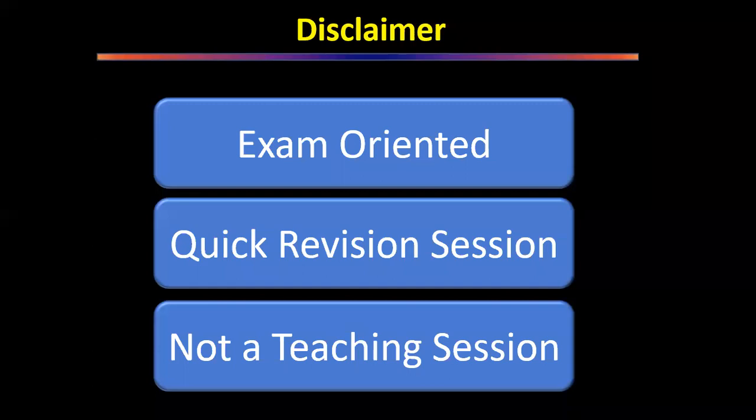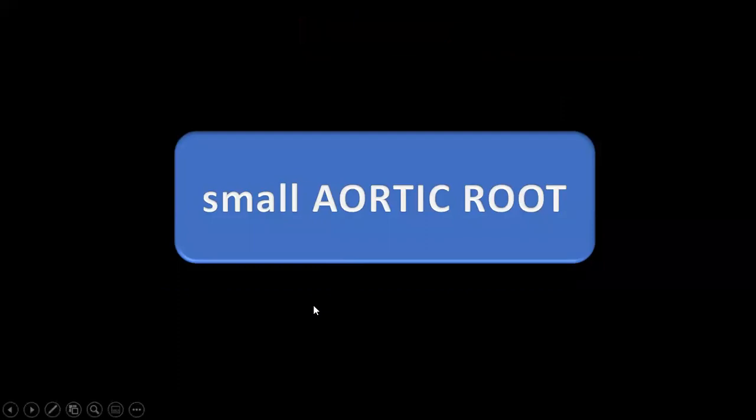This is going to be an exam-oriented revision — it is not a teaching session. We are going to revise what we already know, so there will be no graphs or diagrams, just simple facts. We had covered aortic regurgitation, aortic stenosis, aortic work-up, and we will now go into more detail about the small aortic root, because this will definitely be asked in FRCS, DNB, and MCh examinations.